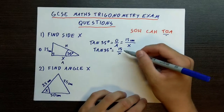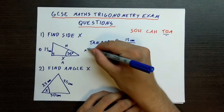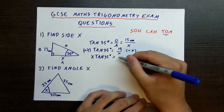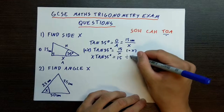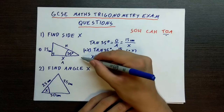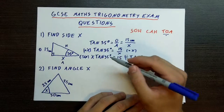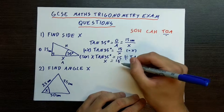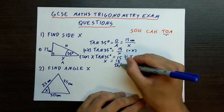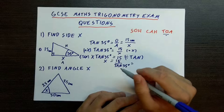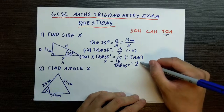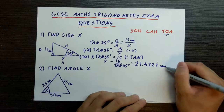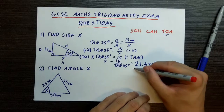So we need to multiply both sides by x first. Multiplying both sides by x gives us x·tan 35 degrees is equal to 15. And now we need to divide by tan 35. Dividing both sides by tan of 35 leaves us with x is equal to 15 divided by tan 35. Now if you put that in a calculator, this will give you 21.42 recurring centimeters. So this is our answer to this question.